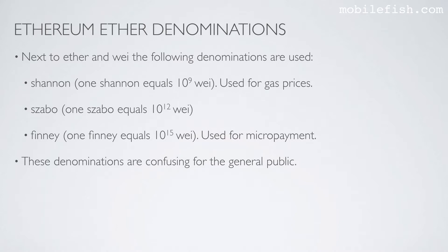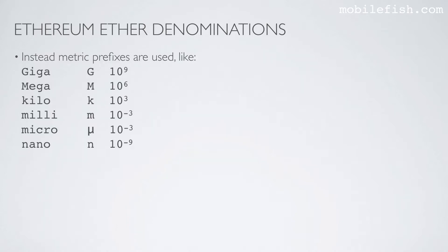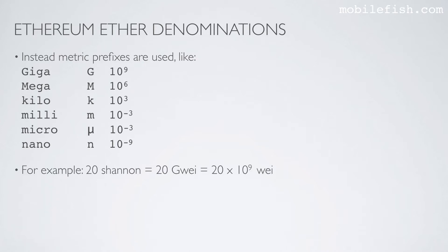These denominations are confusing for the general public. Instead, metric prefixes are used like Giga, Mega, Kilo, Milli, Micro, or Nano. For example, 20 Shannon equals 20 Giga Wei, which is the same as 20 times 10 to the power of 9 Wei.